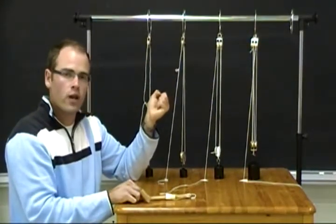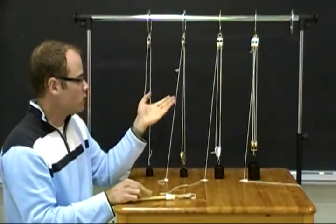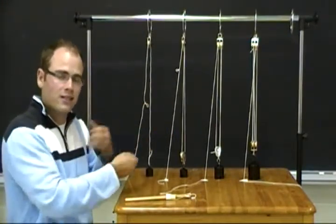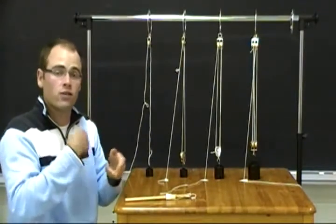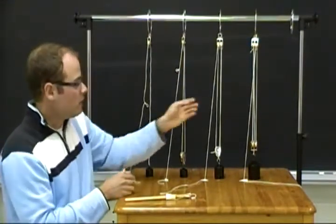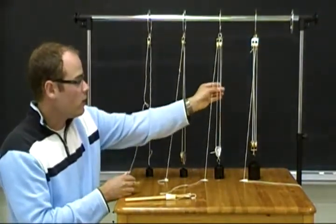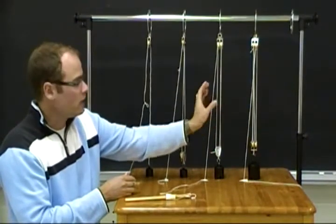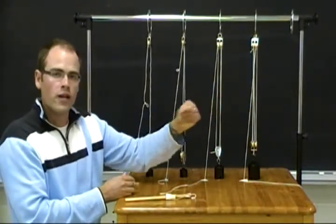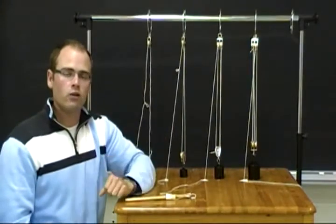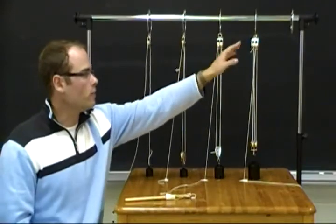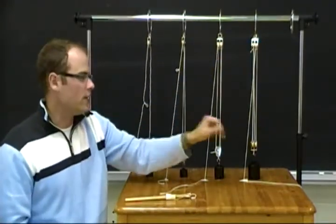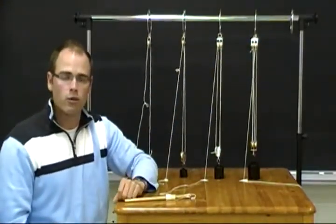You want to ask them if there's a pattern they see as to how much string, the distance in string, that they have to pull in order to get it up to the same height. You'll notice that's also doubled. Now mechanical advantage of 3, we have 3 strings pulling up our weight and then also 4. That's not necessarily a linear relationship when you graph that with your students. That's a relationship that's a little bit more curved because of the friction and the weight of the pulleys that are pulling down.